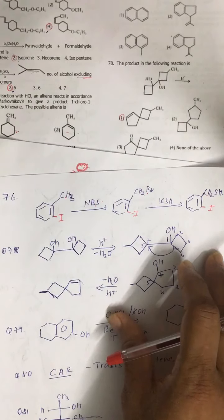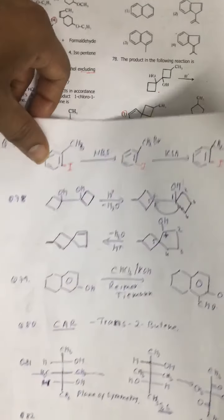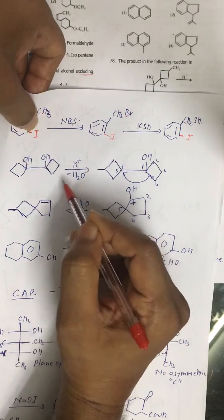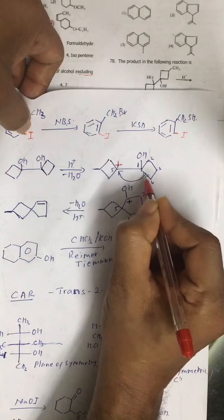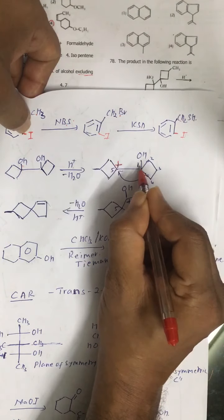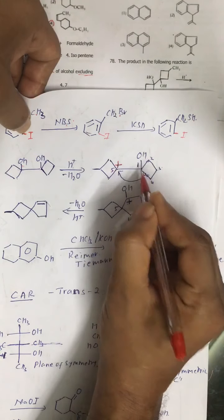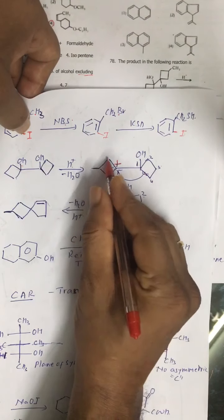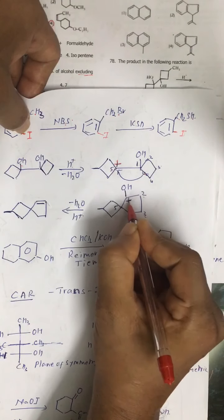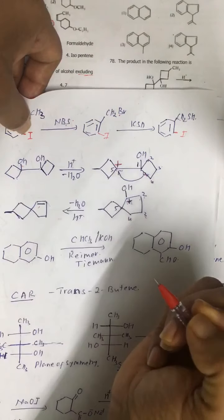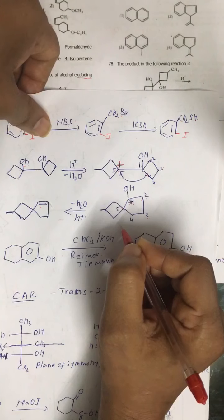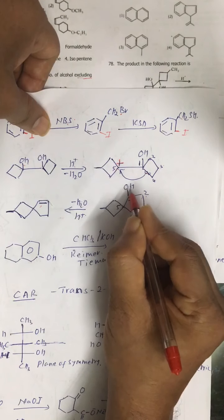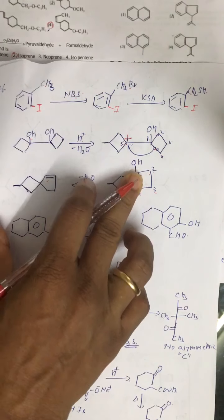Question number 78: this is again a pinacol rearrangement. We have OH and OH. First step, you remove H2O from any position — because both are symmetrical. So first you create a positive charge here, then migration takes place which includes expansion of the ring. Counting: carbon 1 bearing positive charge with OH, then 2, 3, 4, 5. Positive charge is produced over this first carbon atom, and again removal of H2O gives this kind of alkene. So this is the product. Alternatively, migration followed by H2O removal should have formed cyclopentanone, but that option is not given.